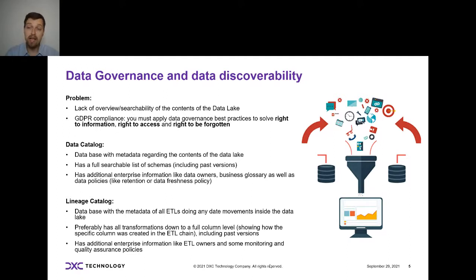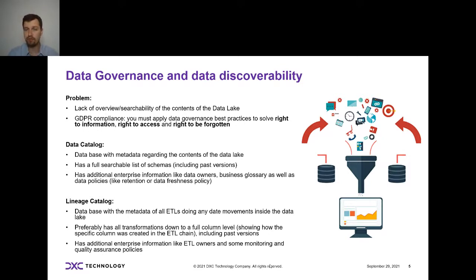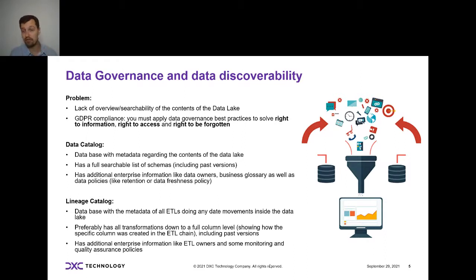By data governance I mean the ability to clearly see data sets, their contents, and how the ETLs connect — we call this lineage. If you just use Apache Spark, you'll have a lack of overview and searchability of what you actually have. Plus, if you're dealing with any privacy data, from a GDPR perspective you cannot avoid having data governance tools like lineage and a data catalog, because in order to fulfill three of the eight rights — right to information, right to access, right to be forgotten — you must have lineage.